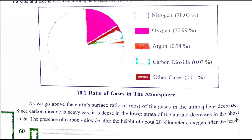As we saw in Part 1, the atmosphere is the air blanket around the Earth. As we go above the Earth's surface, the ratio of most gases in the atmosphere decreases. Carbon dioxide is seen in nature and is found in the lower strata. In the upper strata, the proportion of carbon dioxide decreases.